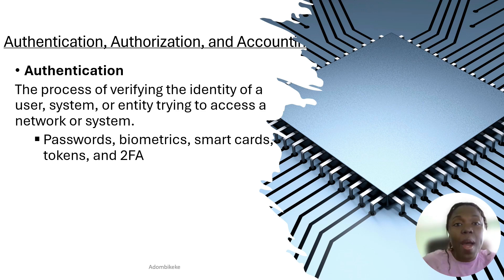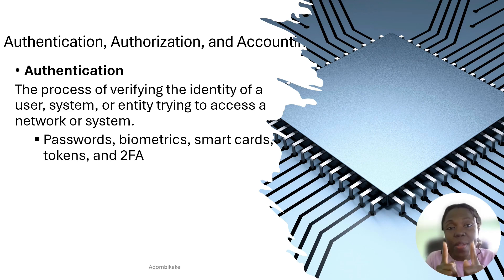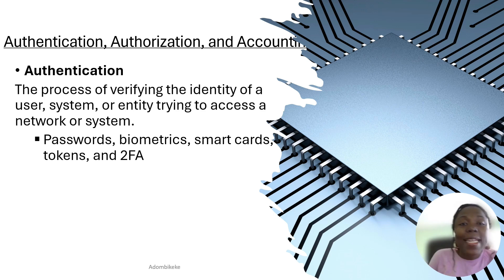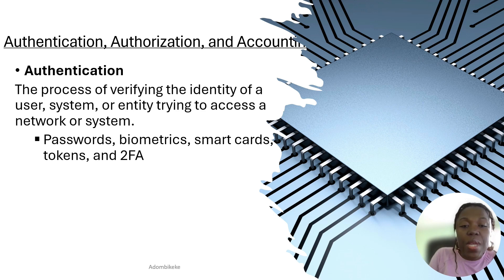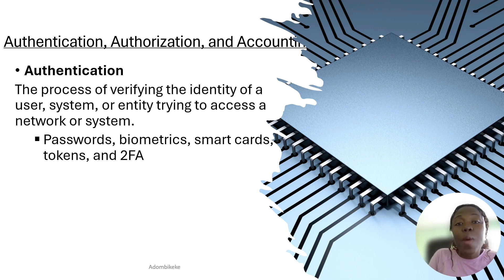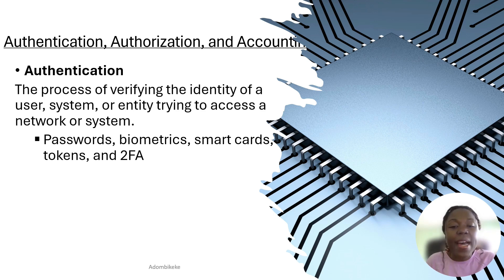Even if we assign access to a department, anybody who logs in can be traced — access can be traced to one person in the department, each individual. Authentication is the process of verifying the identity of a user, system, or entity trying to access a network or system, and one way to do that is by using passwords, biometrics, smart cards, or tokens.